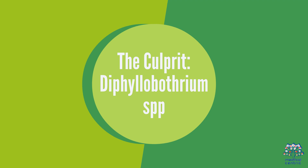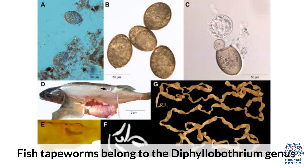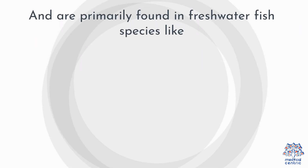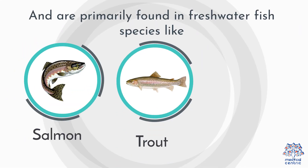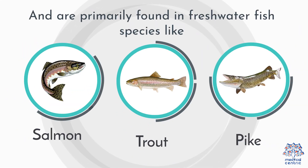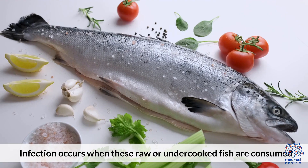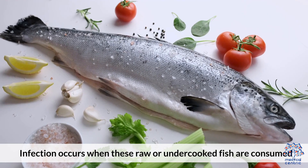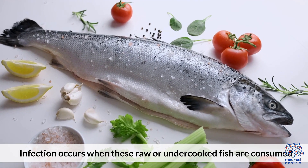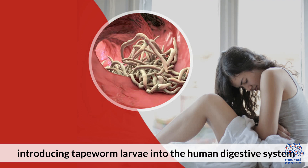1. The Culprit: The Diphyllobothrium. Fish tapeworms belong to the Diphyllobothrium genus and are primarily found in freshwater fish species like salmon, trout, and pike. Infection occurs when these raw or undercooked fish are consumed, introducing tapeworm larvae into the human digestive system.